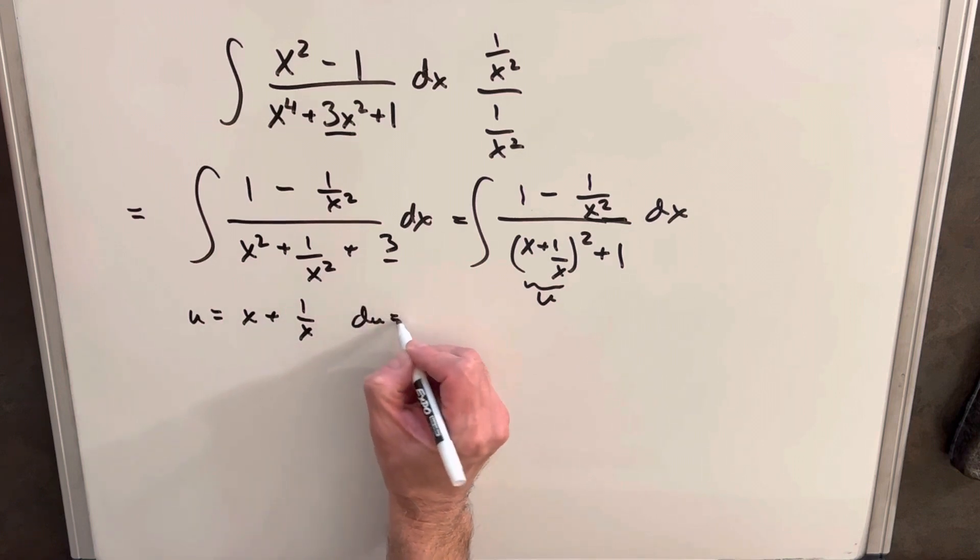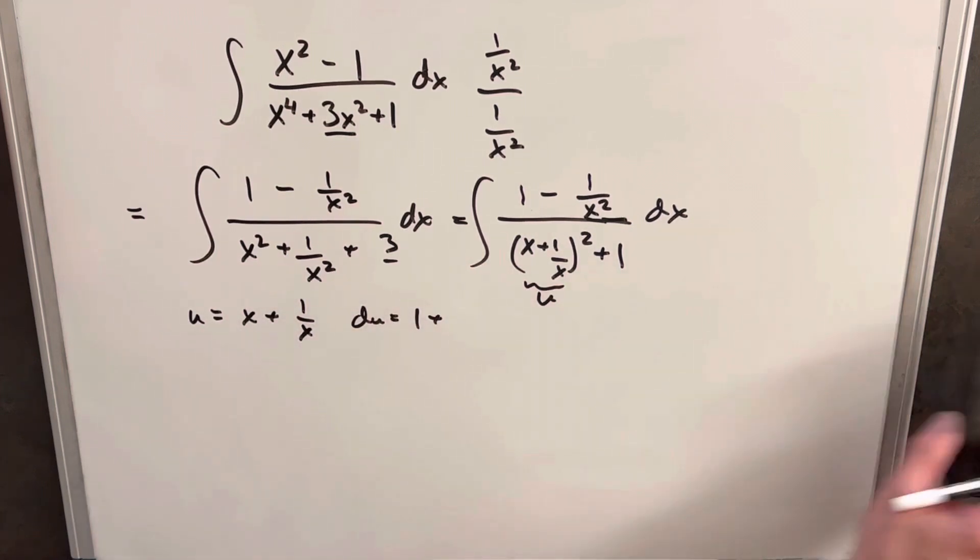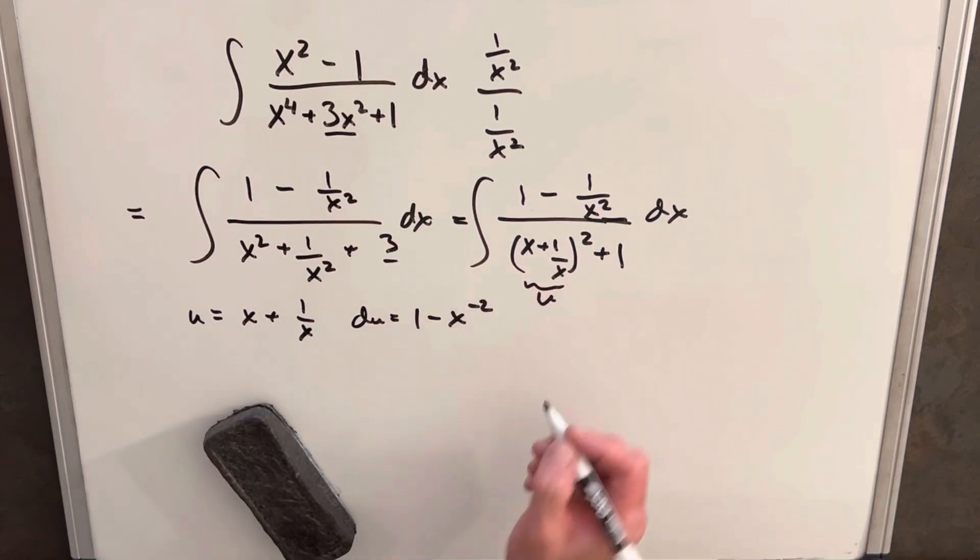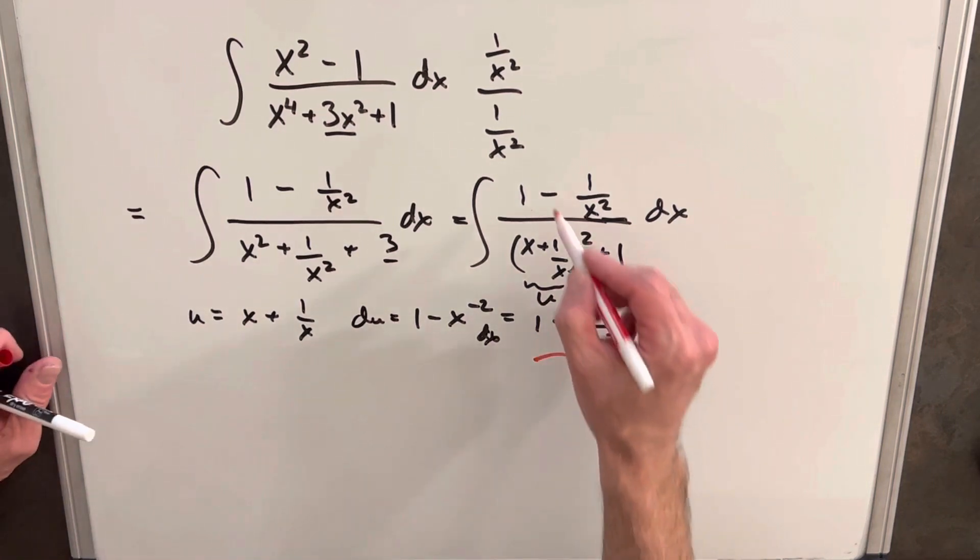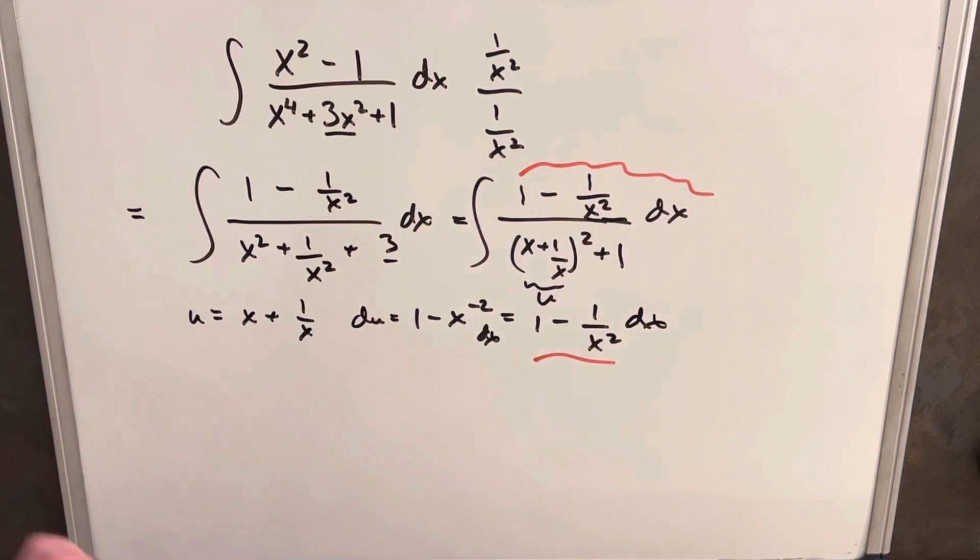That means our du is going to be, derivative of x is 1, derivative of this is going to be minus x to the negative 2. This is the same thing as 1 minus 1 over x squared. And then what we notice is this du value is exactly what we have here in the numerator.